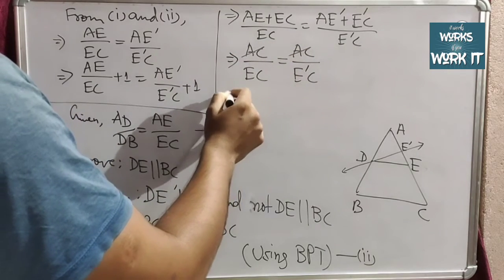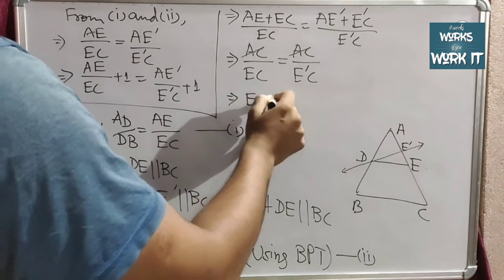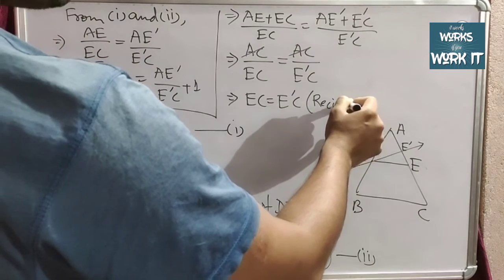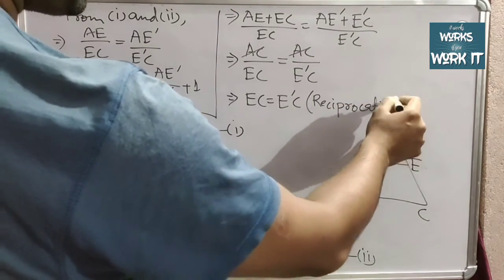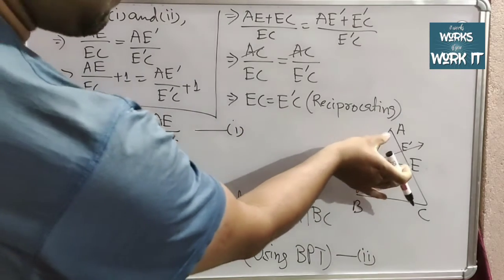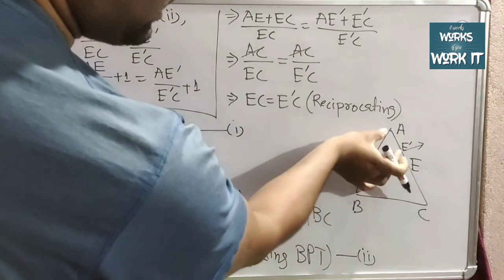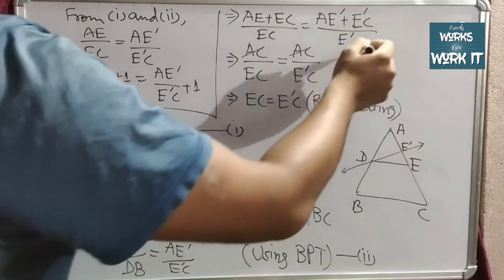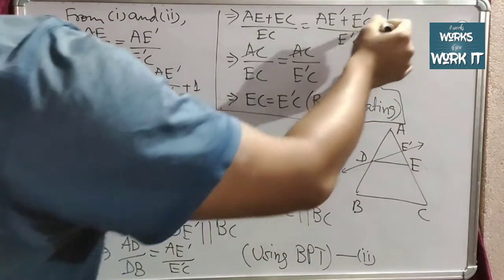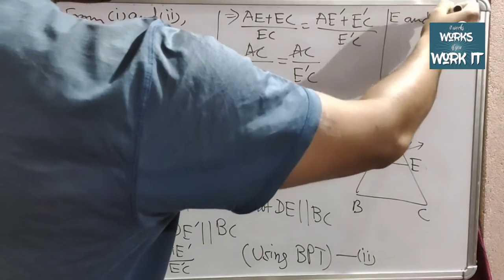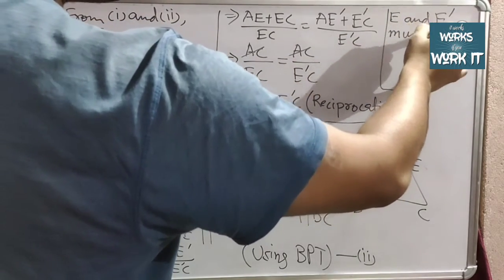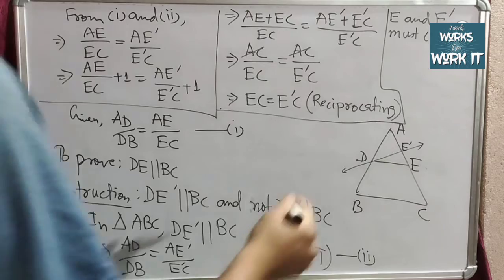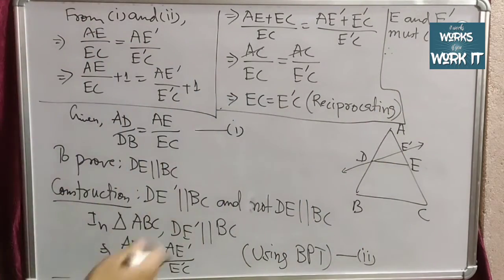Since AC appears on both sides, AC cancels. After reciprocating, we get EC = E'C. This means E and E' are at the same distance from C, so E and E' must coincide with each other.